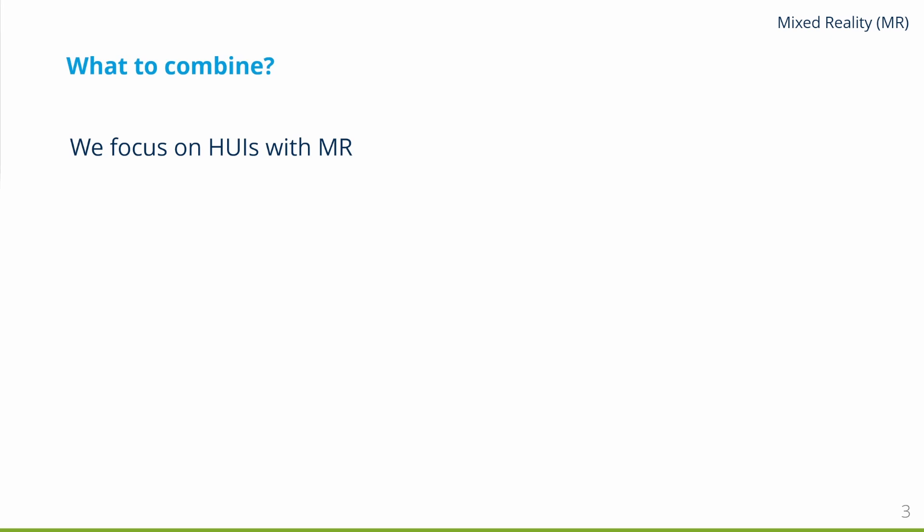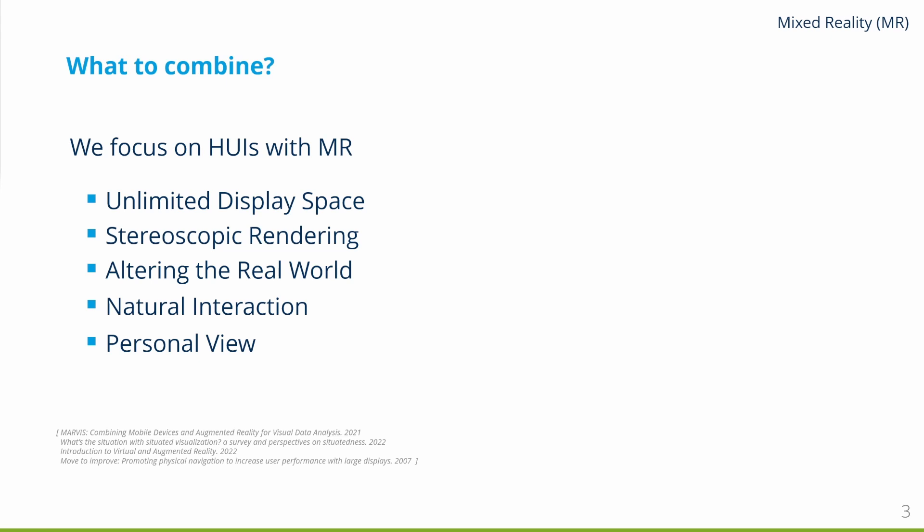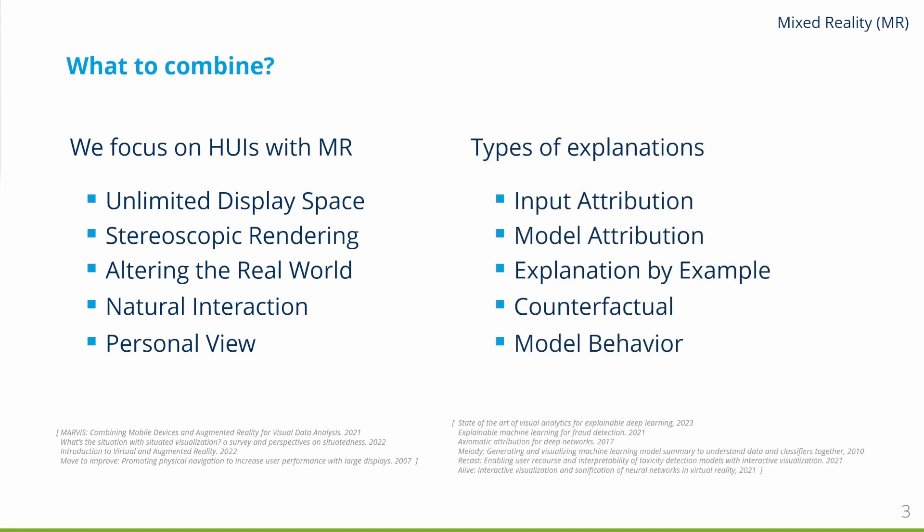In short, the strengths of such devices are unlimited display space, stereoscopic rendering, the ability to alter the real world, natural interaction, and personal views. On the other hand, explainability presents itself in five explanation types: input and model attribution, explanations by example, counterfactuals, and model behavior.